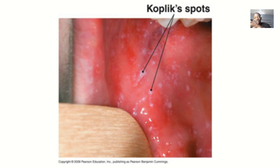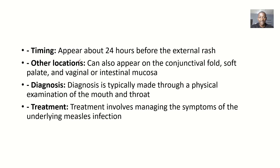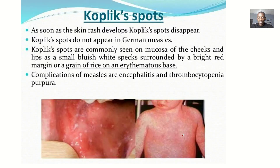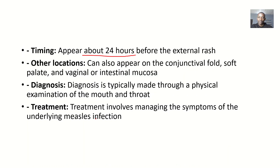Regarding timing, Koplik spots mostly appear about 24 hours before you start having the external rashes. Most measles patients have those external rashes on their chest, hands, faces, and everywhere. But before you have these external rashes, the Koplik spots must have appeared in your buccal cavity. So they appear 24 hours before the external rash.